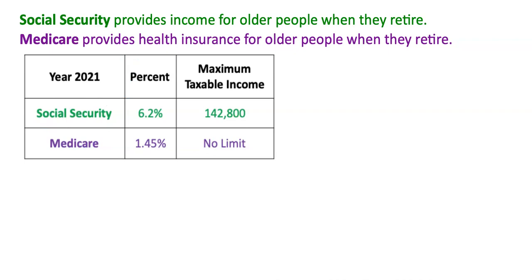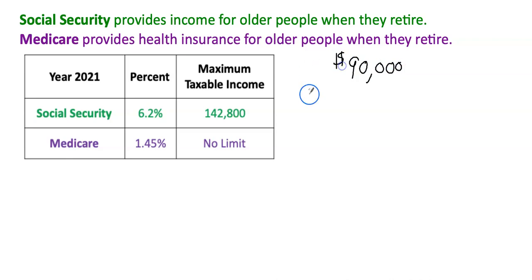So let's look at an example. Let's say your taxable earnings for the year are $90,000. How much did you contribute to Social Security, and how much did you contribute to Medicare?